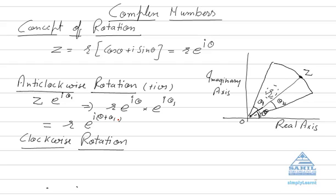So your result will be r·e^(i·(theta + theta₁)). This means that the modulus of the complex number remains the same, but we have rotated to a new position. We started from z and reached a new complex number z₁ whose modulus remains the same as z and whose argument is theta plus theta₁. The modulus is r and the argument is theta plus theta₁.